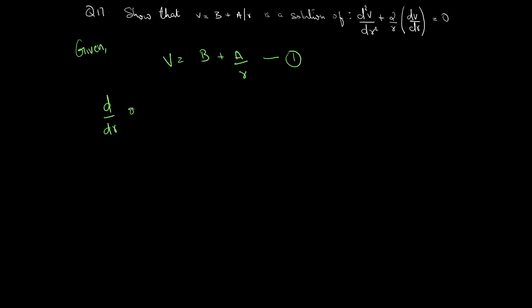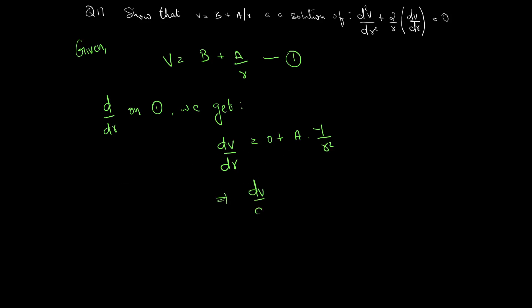Taking d/dr on equation 1, we get dv/dr = 0 + a · d/dr(1/r). The differential of 1/r is −1/r². Therefore, dv/dr = −a/r². This is equation 2.